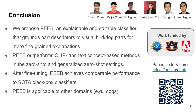In summary, we propose PIP, an explainable and editable classifier that grounds part descriptors to visual bird or dog parts for more interpretable explanations. PIP outperforms CLIP and text concept-based methods in zero-shot and generalized zero-shot settings. After fine-tuning, PIP achieves comparable performance to state-of-the-art black-box classifiers, and is also applicable to other domains such as dogs. This research was funded by the National Science Foundation, Auburn University, and Adobe Research.